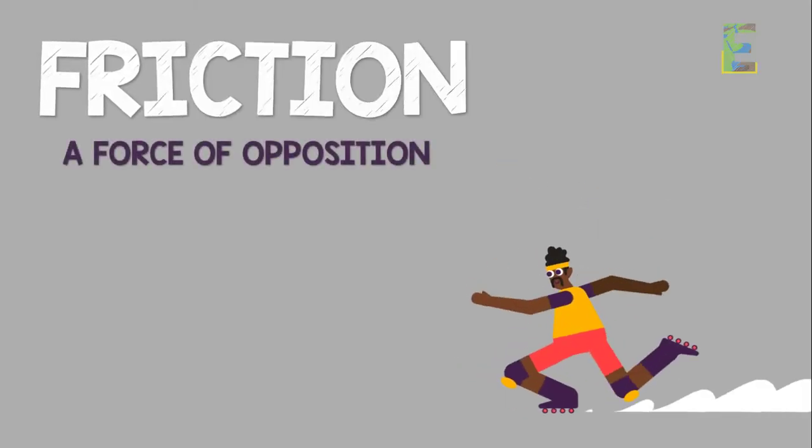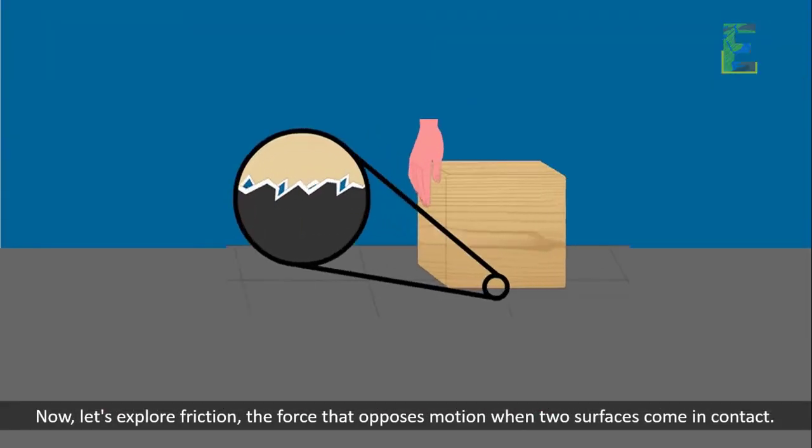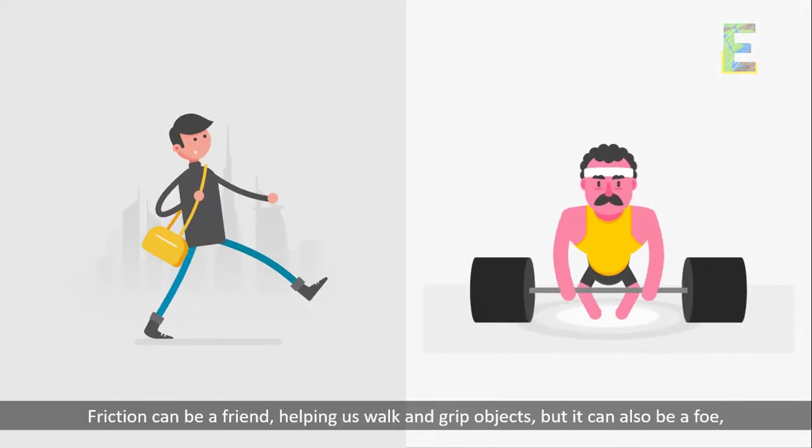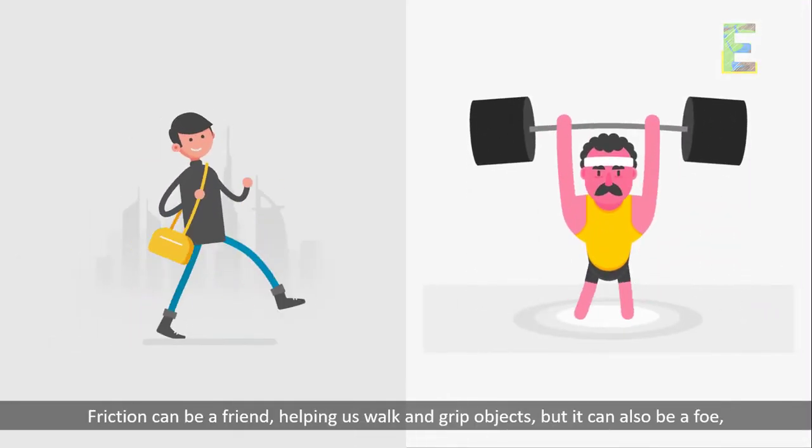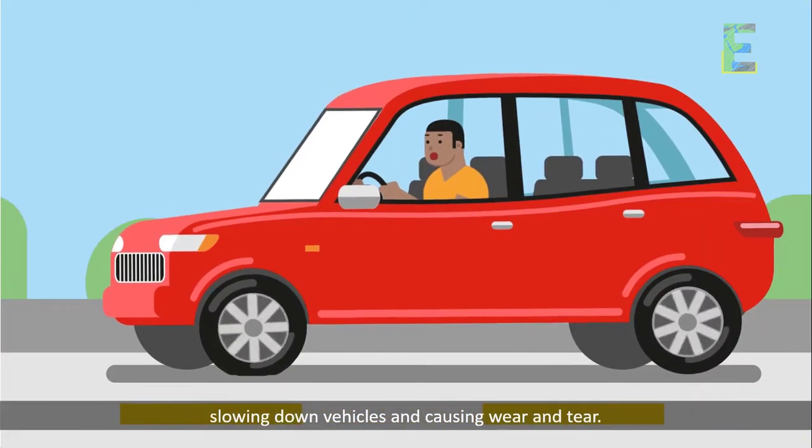Friction: a force of opposition. Now, let's explore friction, the force that opposes motion when two surfaces come in contact. Friction can be a friend, helping us walk and grip objects, but it can also be a foe, slowing down vehicles and causing wear and tear.